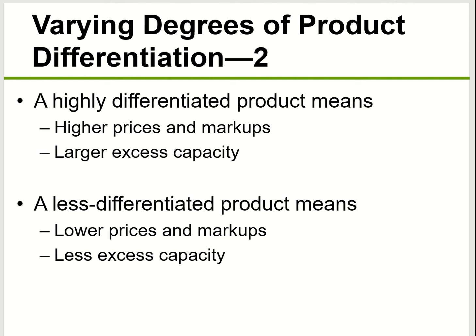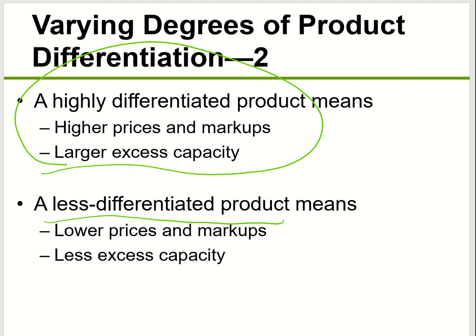For high degree of product differentiation, you're going to see higher prices and higher markup — that's why you see a huge price difference between Gap, Banana Republic, and J.Crew. There's also larger excess capacity, meaning the market is more inefficient. For markets with less product differentiation, like pizza, they tend to have lower prices, lower markup, more competition, and less excess capacity — that's why pizza companies have sales and buy-one-get-one deals all the time.